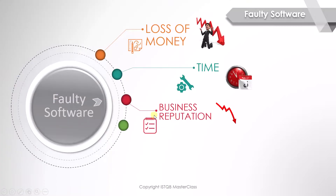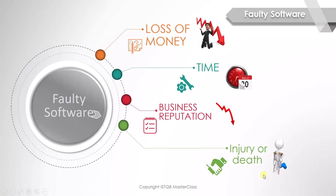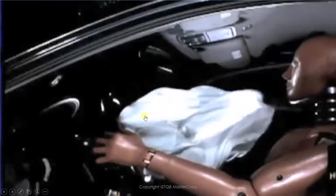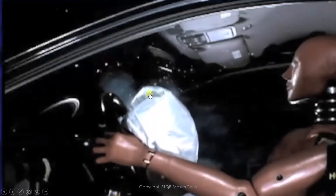The final consequence to keep in mind is injury or death. The failure of certain software can have grave results. Taking the example of the faulty airbags in the recalled cars, you can see from this video that the airbag system is leaking air from this section here.